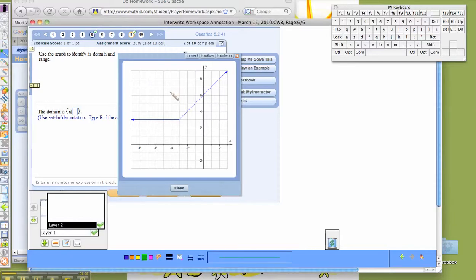I'm going to take my pen, and we're going to talk about the domain here, because the first question is the domain. Domain, we're looking at the x values. We're looking at how far the graph goes left and how far the graph goes to the right.